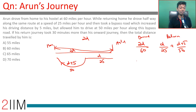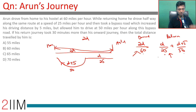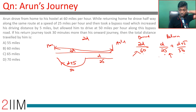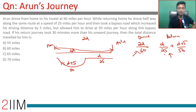The time taken difference will be in terms of hours. We have assumed D in miles, and the speeds are in miles per hour, so the times will be in hours. His return journey actually took 30 minutes more than his onward journey — that means half an hour more.